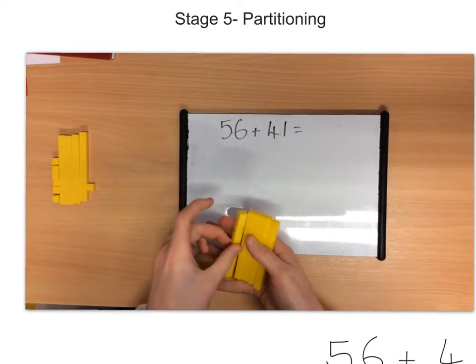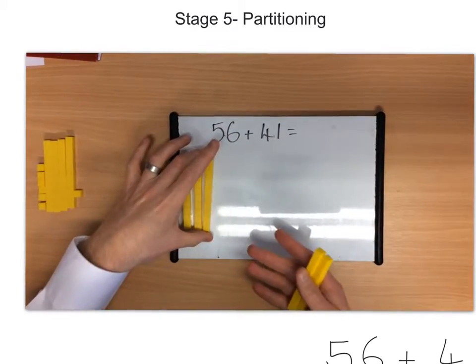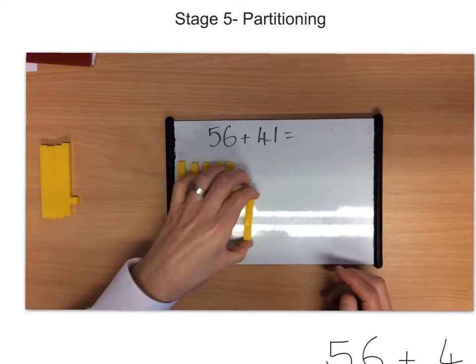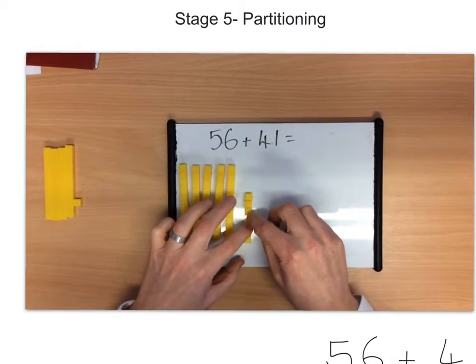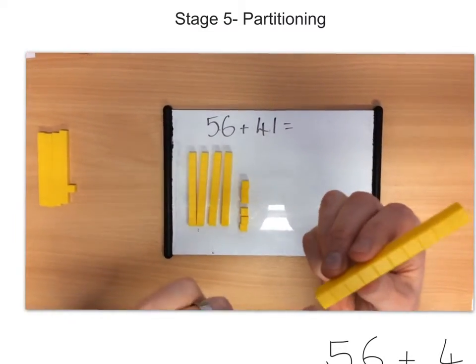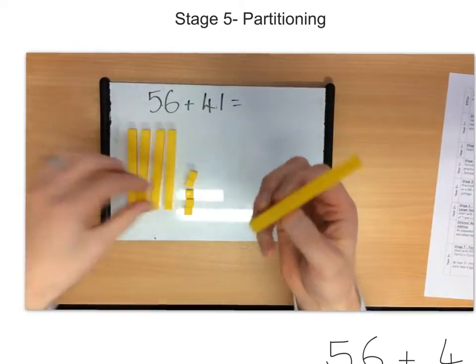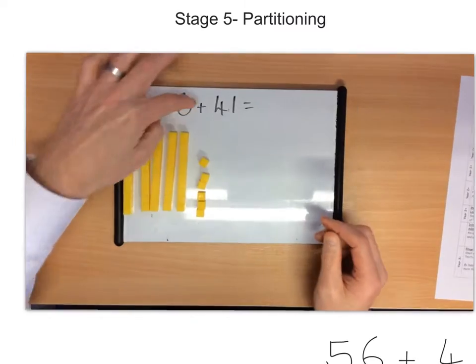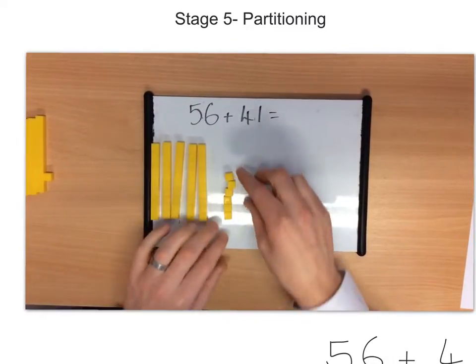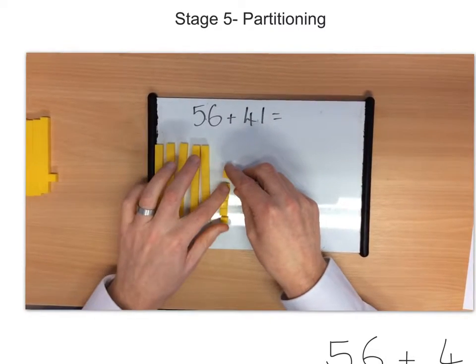Now, one of the best resources we have is the Dienes, or the base 10 resources, which allow you to look at 10s and 1s as actual physical blocks. Each one of these rods here is worth 10, and you can actually see them, a little line there, and each one relates to one 10. So, the number 56 is shown as 5 10s, which makes 50, and 6 1s.